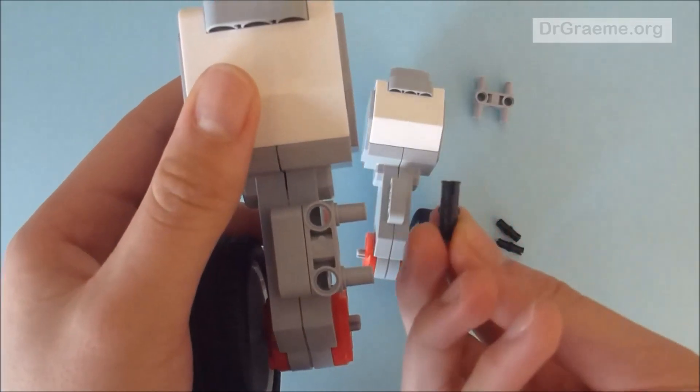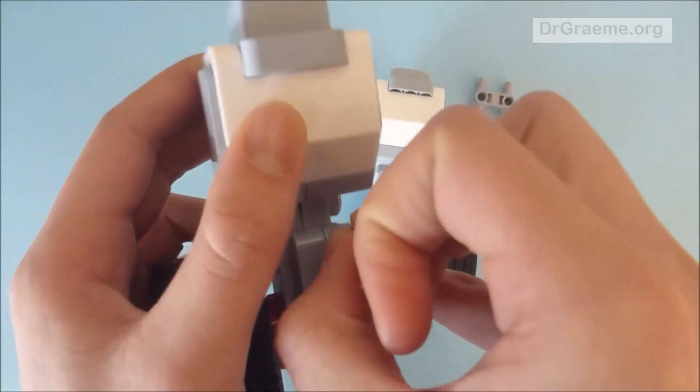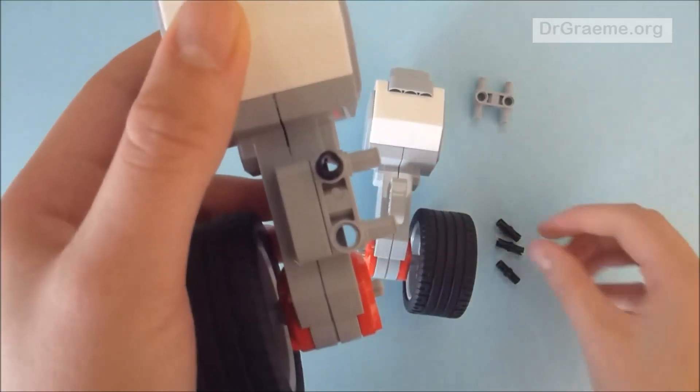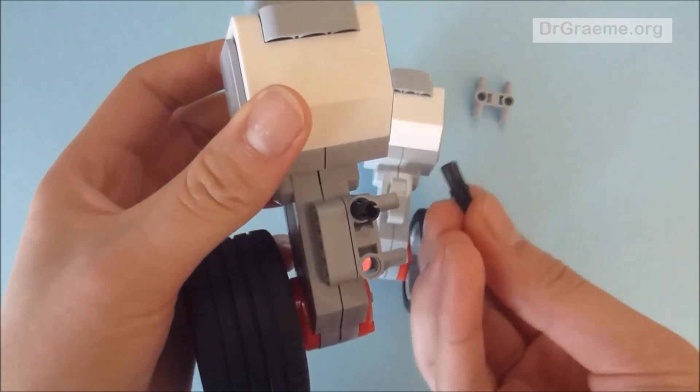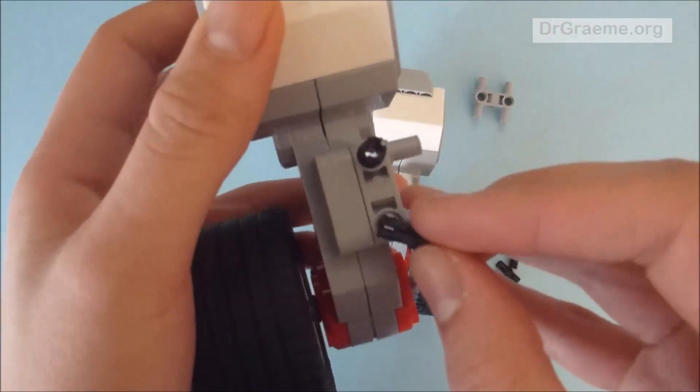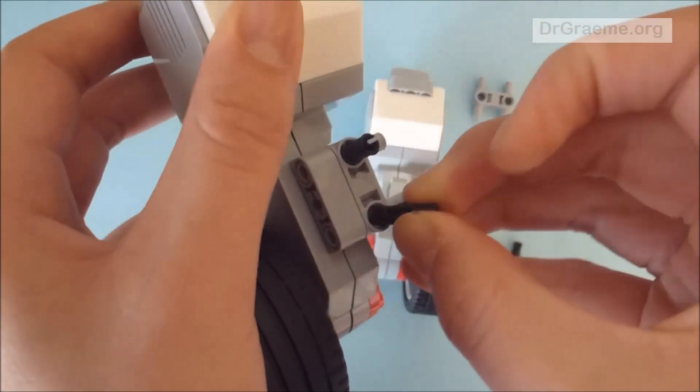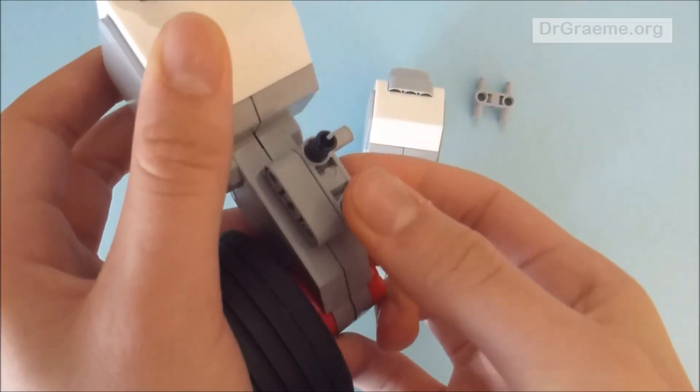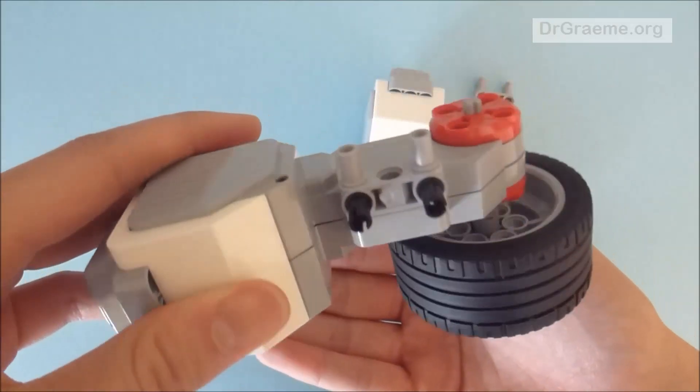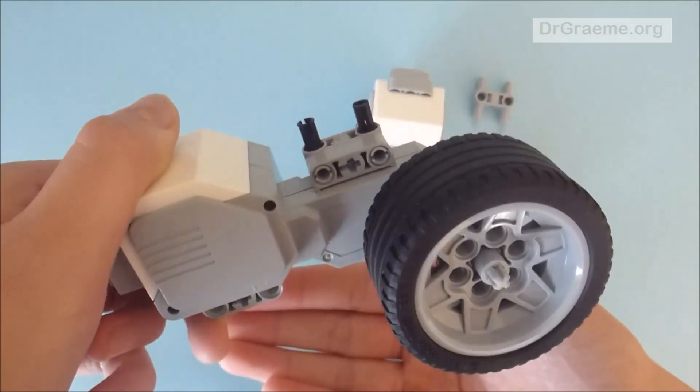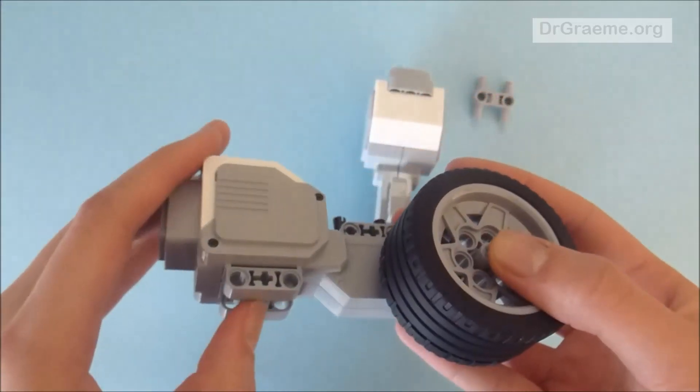Now we're going to take one of the connector rods and place it in one of the holes on top. It doesn't matter which one because we'll be placing the other connector rod into the second hole. It can be a bit of a fiddle sometimes if you get it in the wrong way, but this is what it should look like. Make sure you place it on that side and not on this side of the motor.